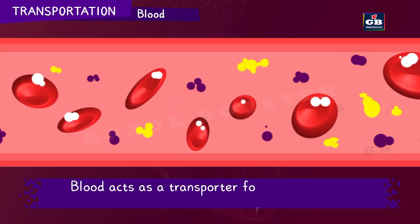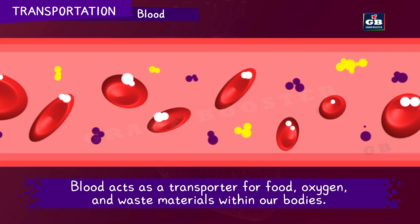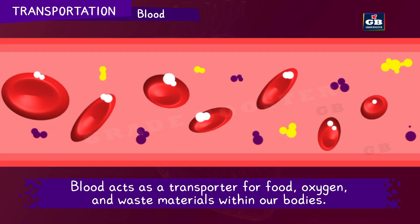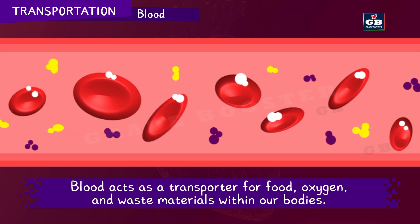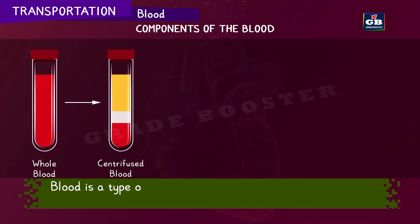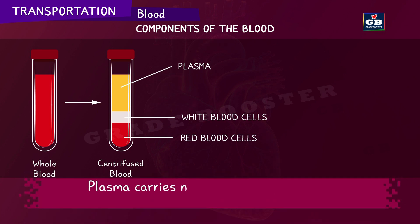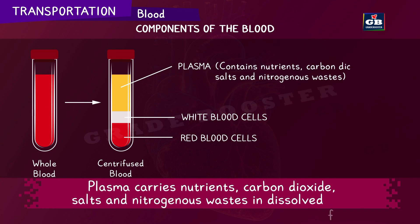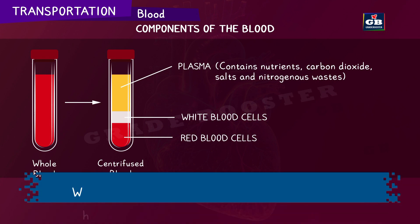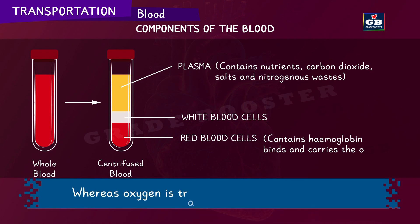Blood acts as a transporter of food, oxygen and waste materials within our bodies. Blood is a type of fluid connective tissue. It is composed of plasma and blood cells. Plasma carries nutrients, carbon dioxide, salts and nitrogenous wastes in dissolved form, whereas oxygen is transported by red blood cells.